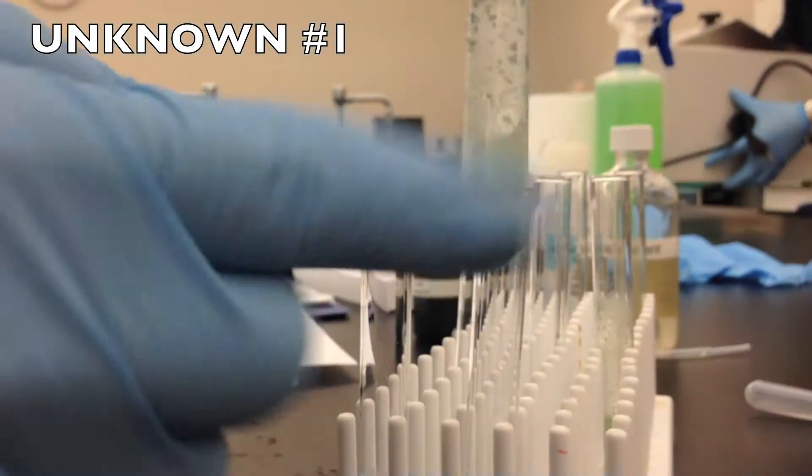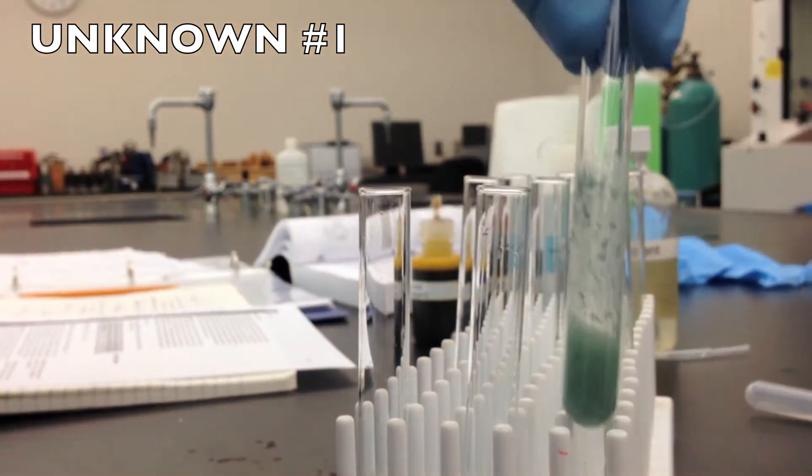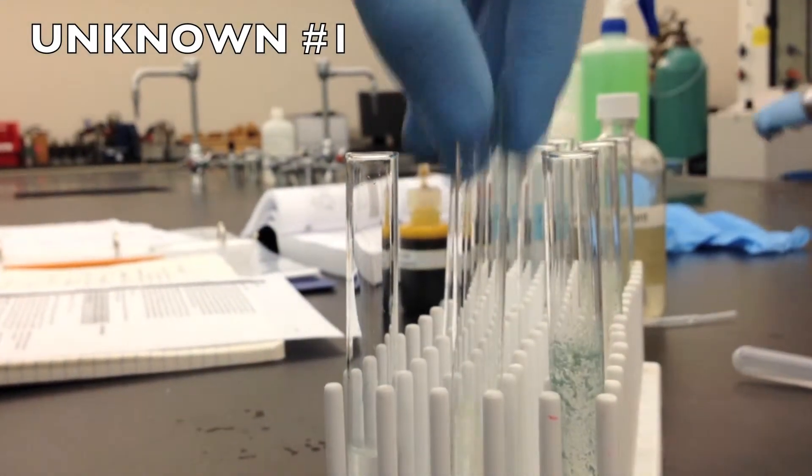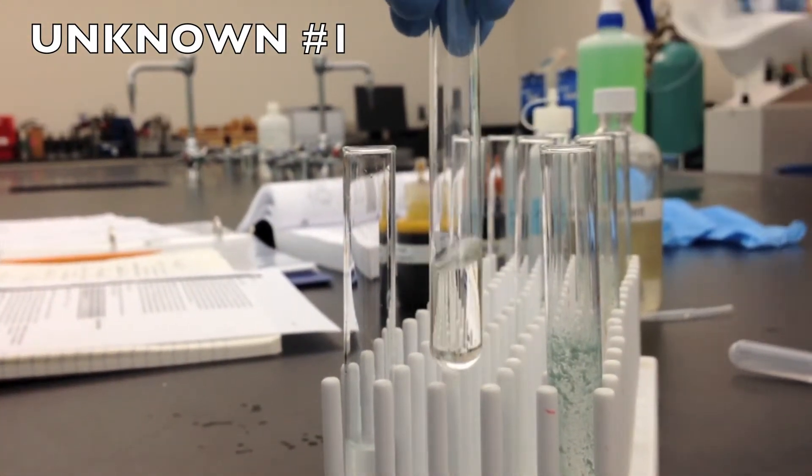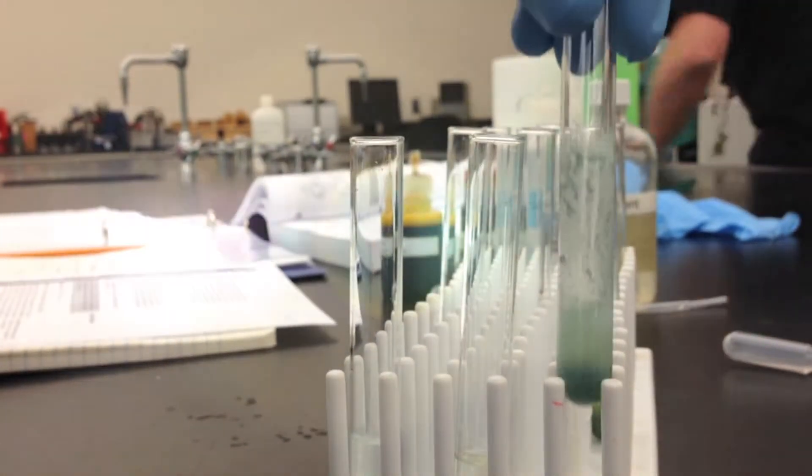And then for the third test, the chromic acid test, we got a positive reaction, which we can assume is either a primary or secondary. And since it did not react positively with the Lucas test, we know it's not a secondary. So it must be a primary.